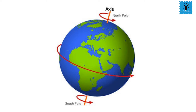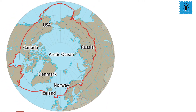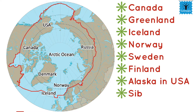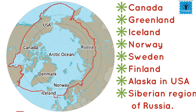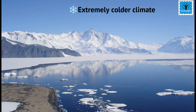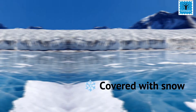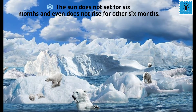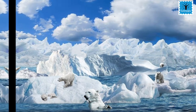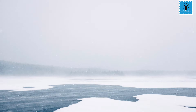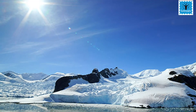The polar region, as the name suggests, is situated near the poles — that is, the North Pole and the South Pole. Countries in the north polar region include Canada, Greenland, Iceland, Norway, Sweden, Finland, Alaska in the USA, and the Siberia region of Russia. Polar regions show an extremely cold climate, covered with snow for most of the year. The sun doesn't set for six months and doesn't rise for the other six months. The temperature goes down below minus 37 degrees Celsius during winters, and the ground remains frozen most of the year, with water available only during the short summer when snow melts.